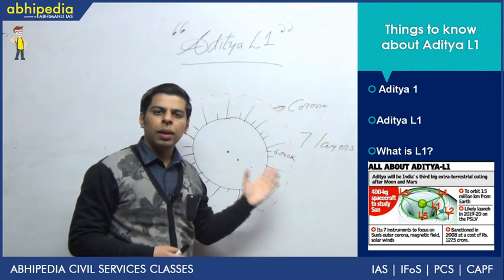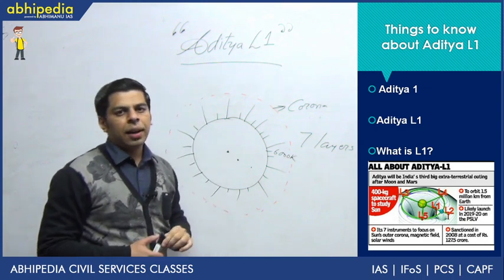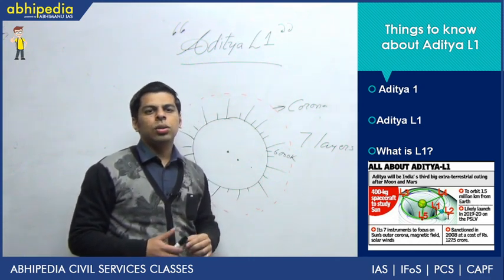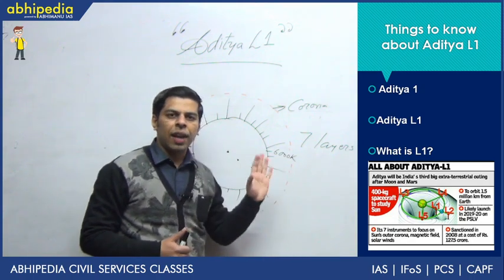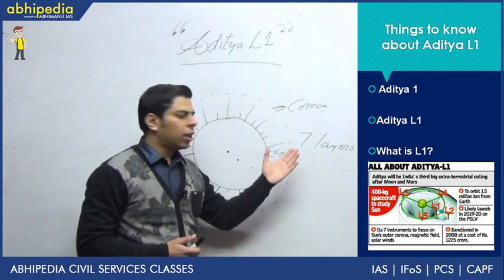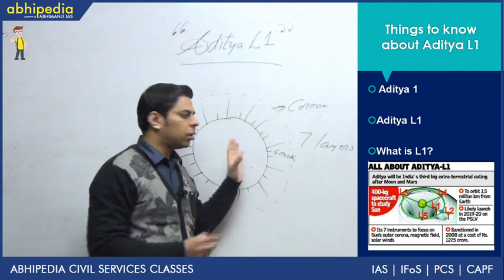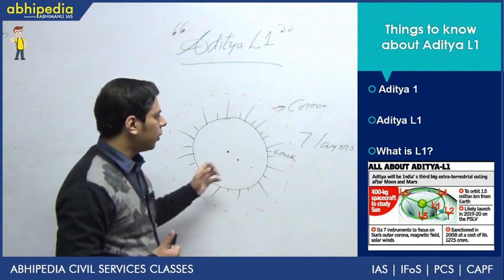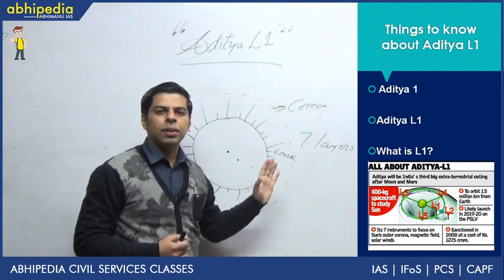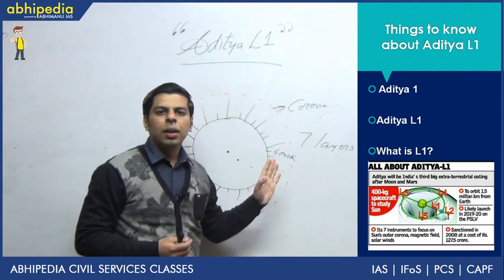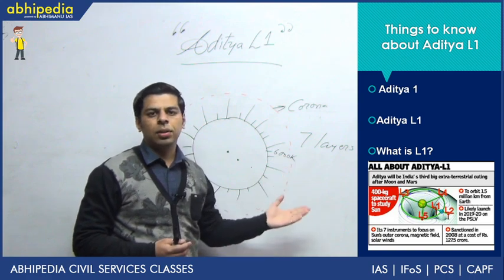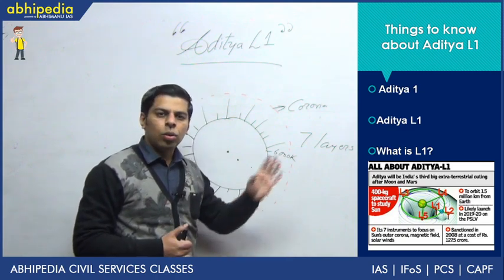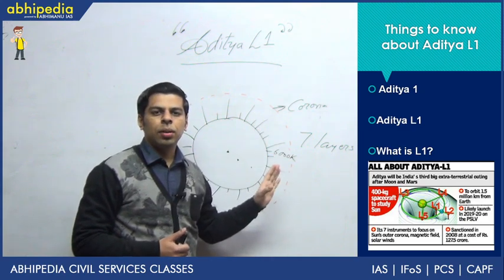What is L1? This could be directly asked in your prelims. L1 stands for Lagrangian point, first proposed by mathematician Joseph Louis Lagrange. He predicted there are five specific points in our solar system where the gravitational pull of the sun and earth are equal. If you place a satellite in that orbit, it is not likely to be deflected by the gravitational pull of these heavenly bodies. The best advantage of placing the satellite at L1 or any of these points is that it has the luxury of not being eclipsed by solar eclipses, so it will provide year-round data. This is the reason why we upgraded from the Aditya 1 mission to the L1 mission.